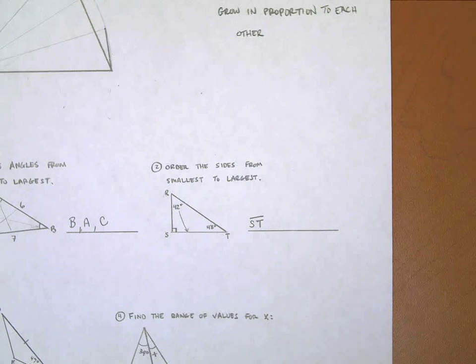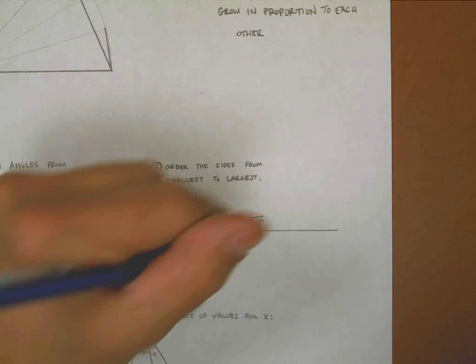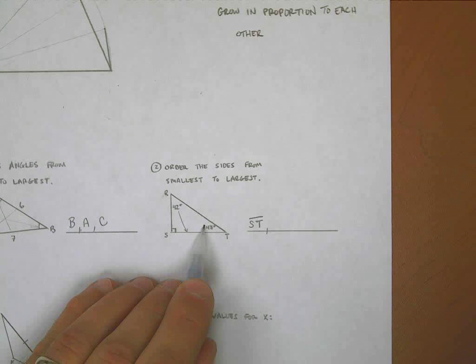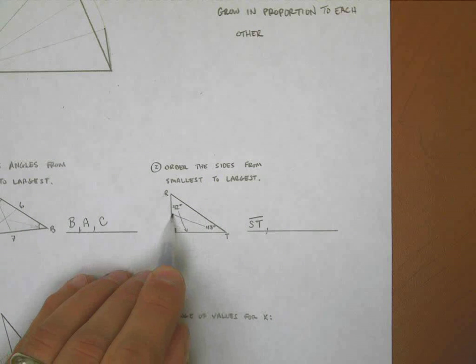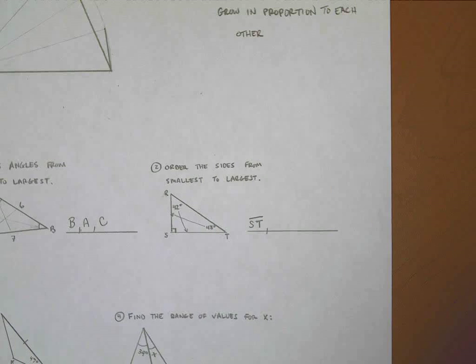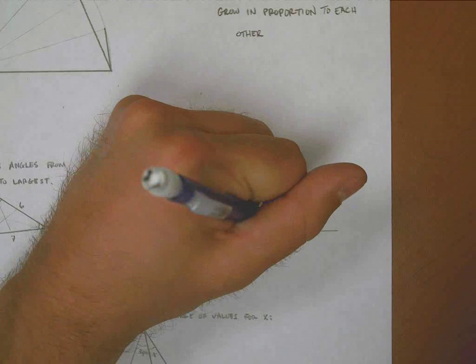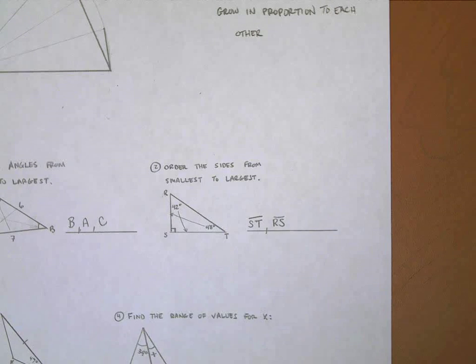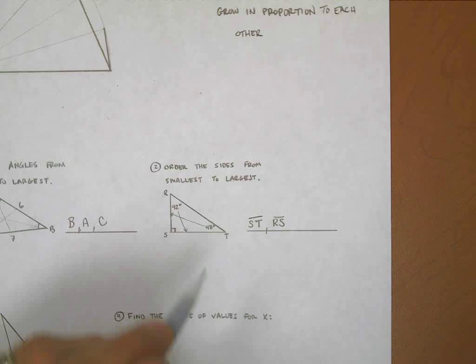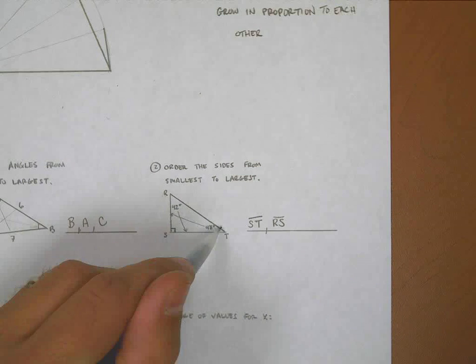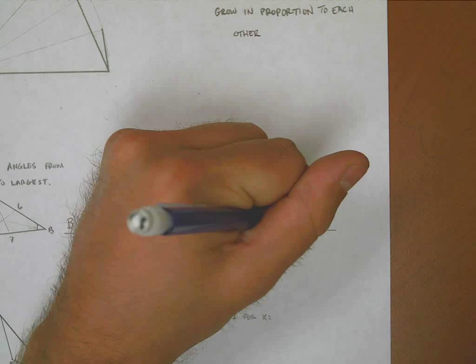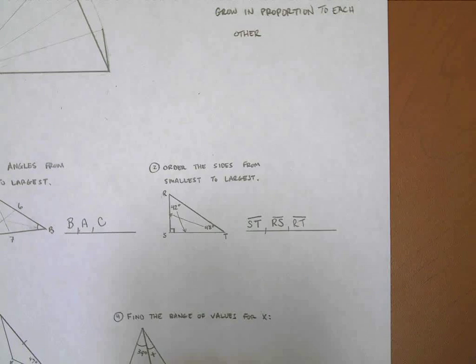Now the next smallest side is the one that's across from the 48 degrees. That is the side that connects R to S, so I'm going to call this RS, line segment. That leaves me the longest side, which should be the hypotenuse. That's the one that connects R to T. That's because it is across from the biggest angle, 90 degrees.